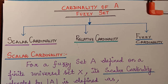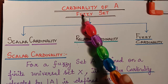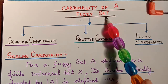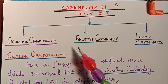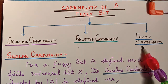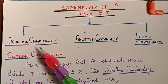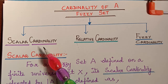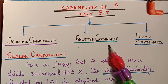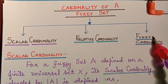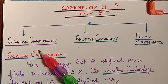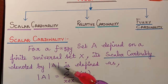Hello students. In this video we shall learn about the cardinality of a fuzzy set. There are three types of cardinality for a fuzzy set: scalar cardinality, relative cardinality, and fuzzy cardinality. Now we shall see these with the help of examples.